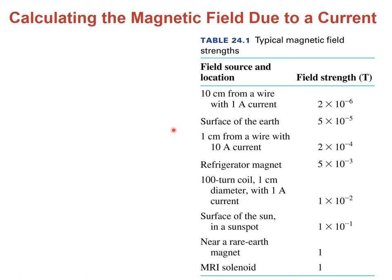This table shows the strength of magnetic fields for different cases. For instance, one of those normal wires used to power a blender or a computer carries about 1 amp of current, and the field strength about 10 centimeters from the wire is going to be 2 times 10 to the negative 6 Teslas. Going all the way to a solenoid inside a magnetic resonance instrument, the field strength is about 1 Tesla — so it grows by about a million times. The field on the surface of the Earth is also of a comparable magnitude, though it varies.